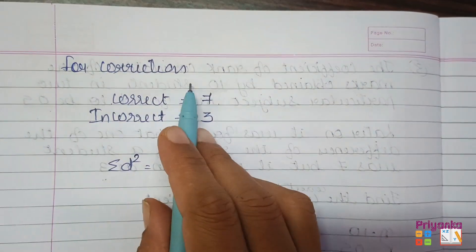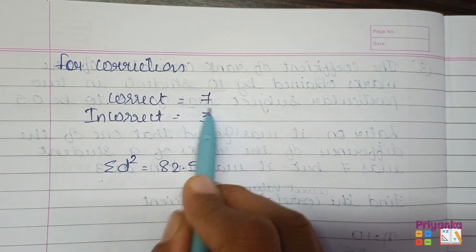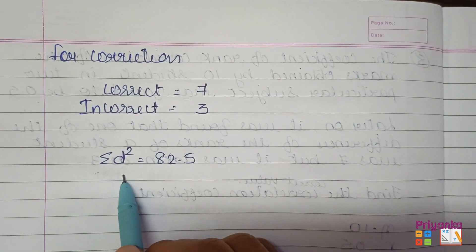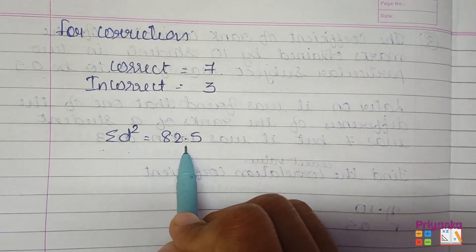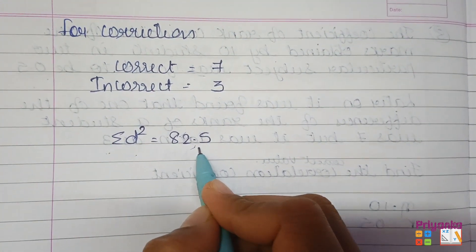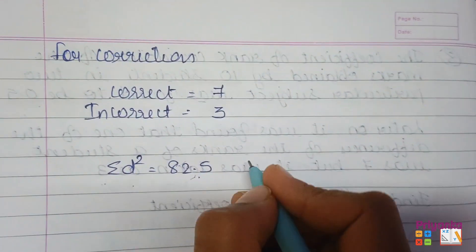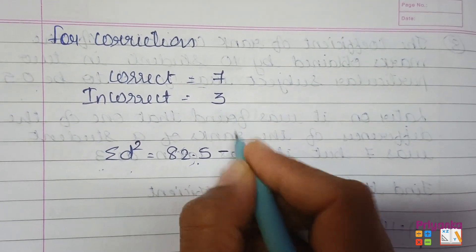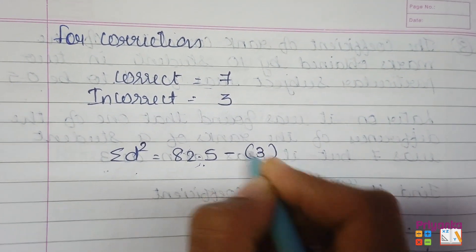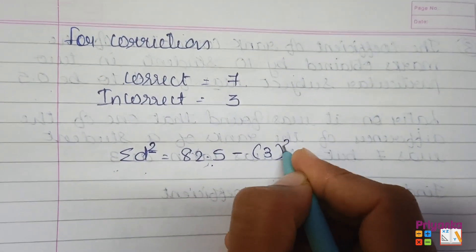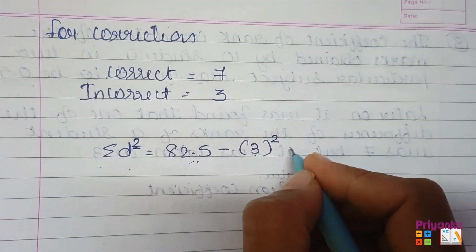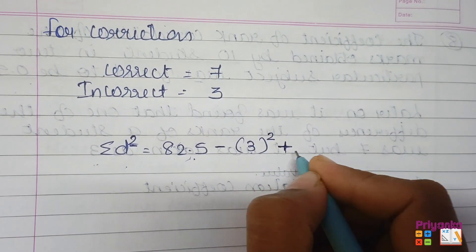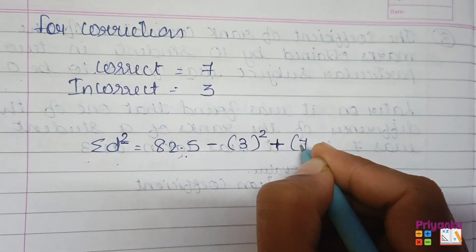So we have found the information of sigma d square. Some correction has been still pending, so let's continue for the correction. The correct number was 7 and incorrect was 3, and sigma d square which we found just now is 82.5. First of all take the sigma d square, then get minus with the incorrect one that is 3, and remember the square has to be kept on the top for the incorrect as well as for the correct. The correction was plus and 7 square.